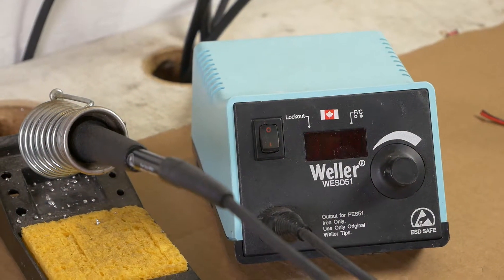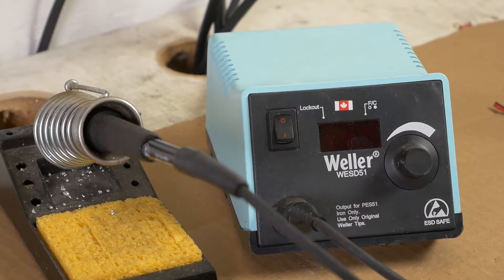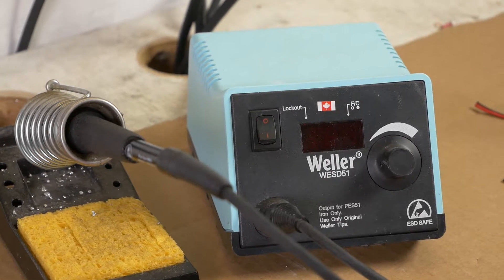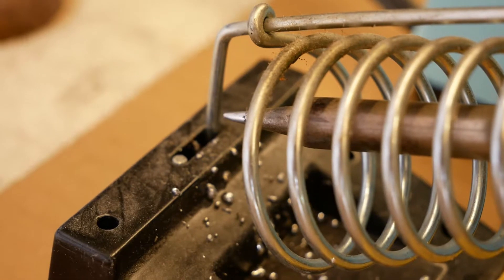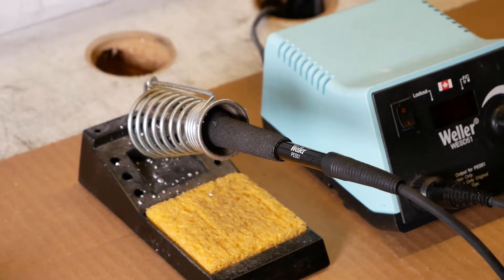Here we have a Weller temperature-adjustable soldering iron, but you can work with a more basic type too. For lead-based solder, a 35-watt iron is okay, and for lead-free, you'll need at least 45 watts.